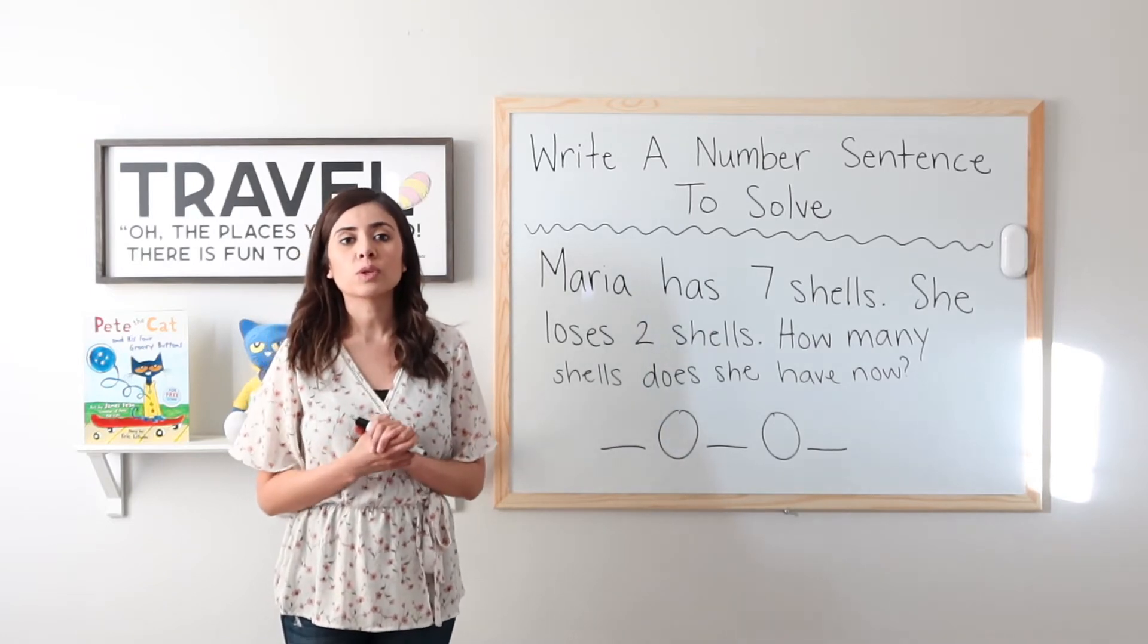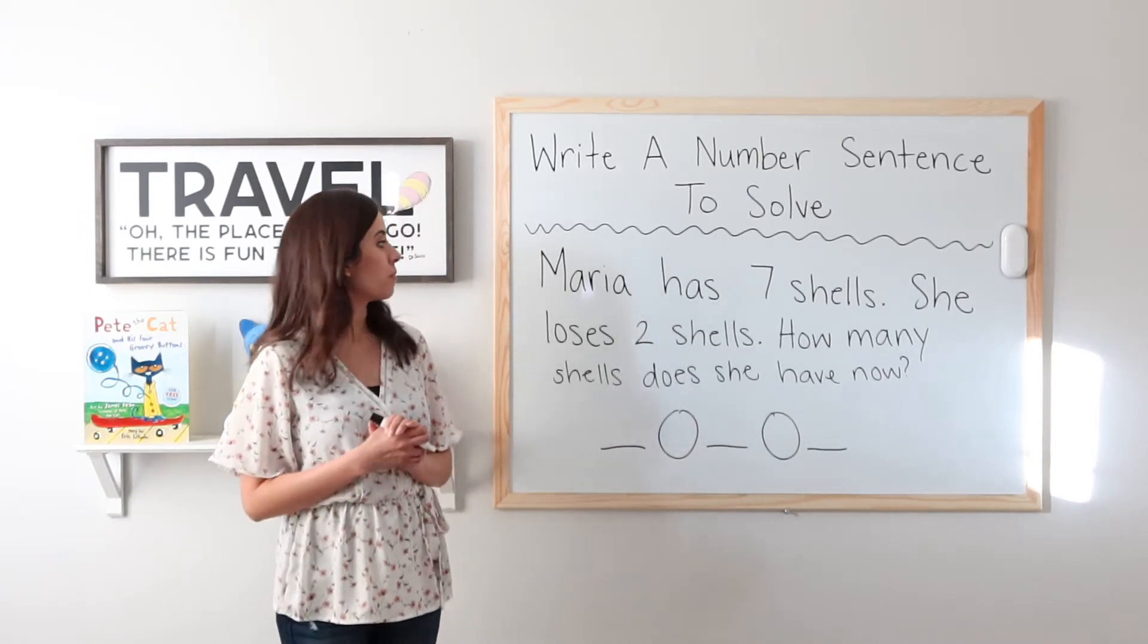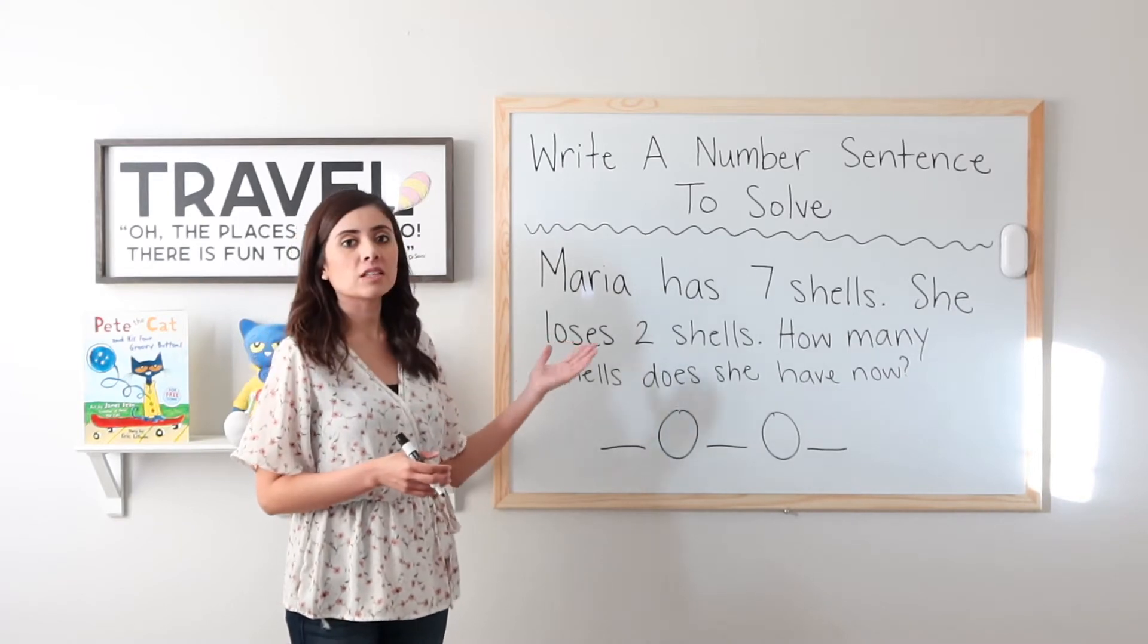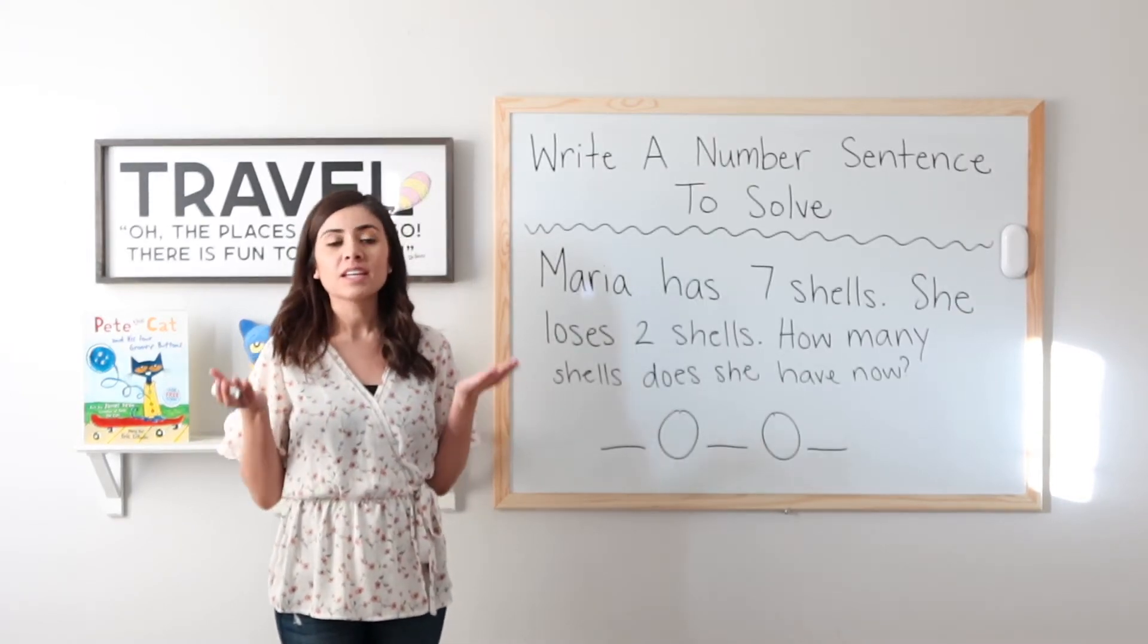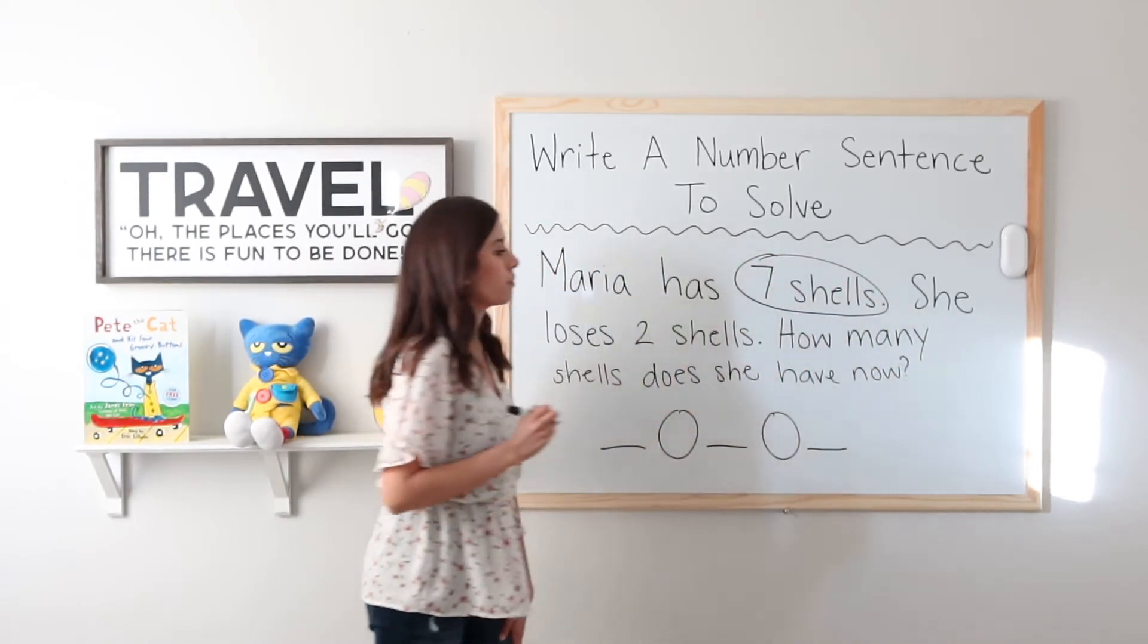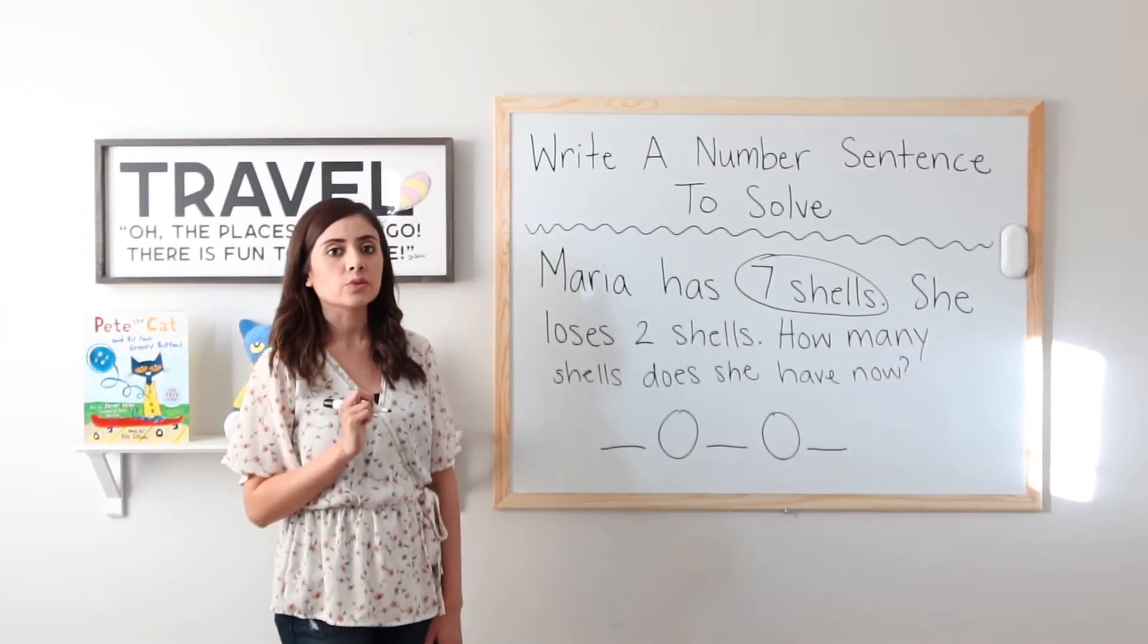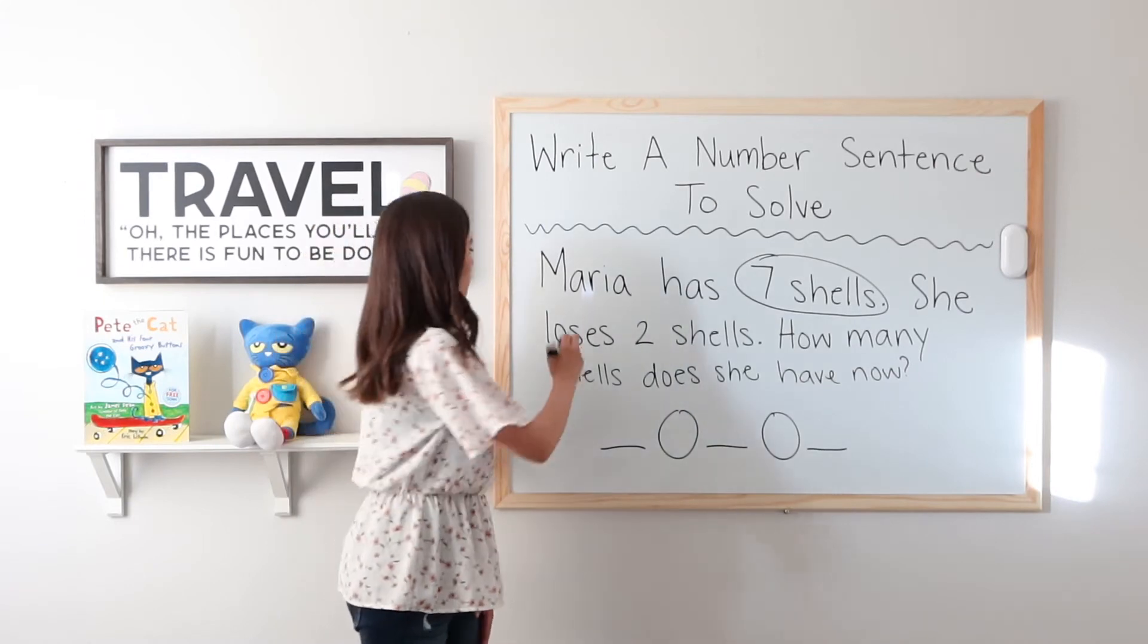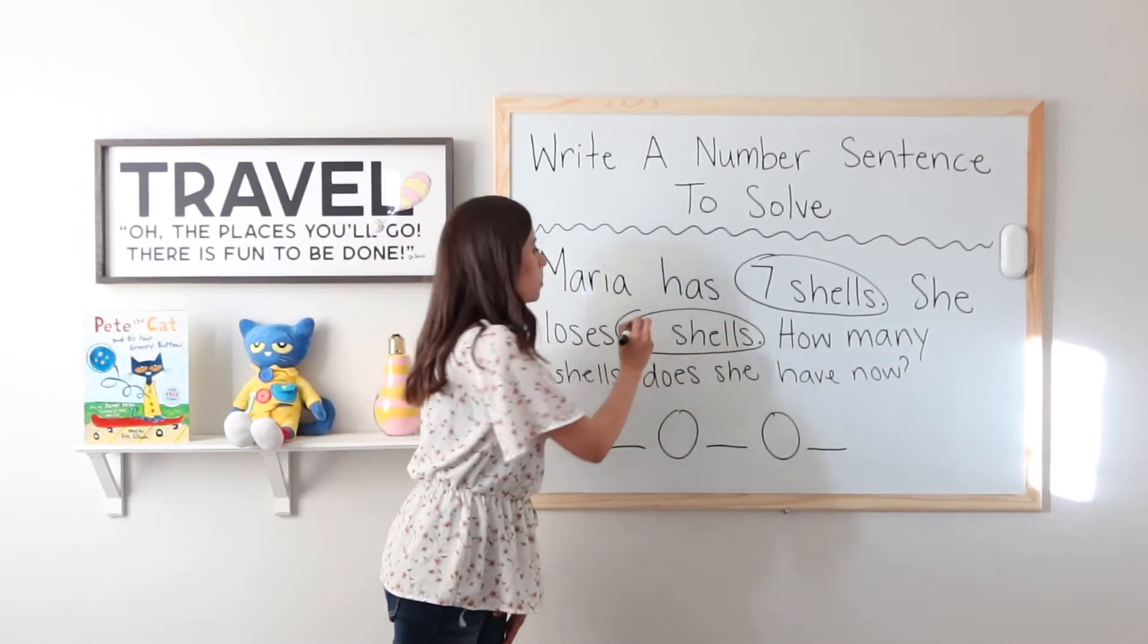Now let's do step number two where we circle what we already know. I know that Maria started with how many shells? Seven. Seven shells. How many did she lose? Two.